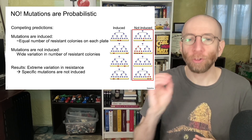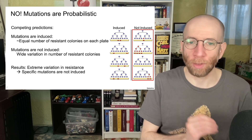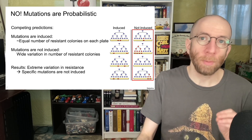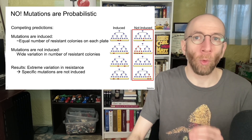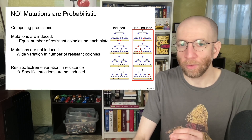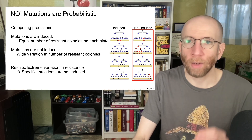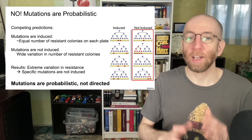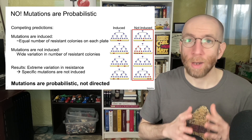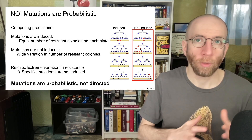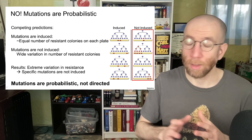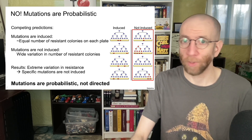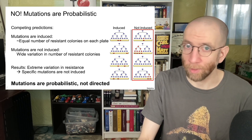What do we actually find? We find extreme variation in resistance, meaning these specific mutations for virus resistance are not induced. In other words, mutations are probabilistic, not directed. This is direct experimental evidence.